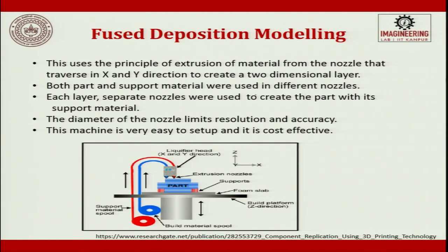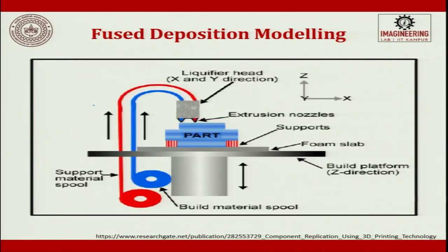Both part material and supporting material are used in different nozzles — for example, one color for the product material and another for support. Multiple nozzles can be used to feed different wires. The diameter of the nozzle limits the resolution and accuracy. This machine is very easy to set up and cost-effective. The nozzle or the table can move depending on requirements.